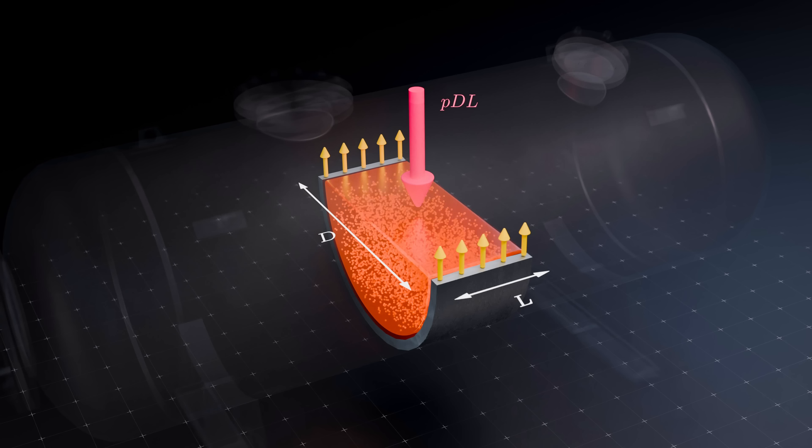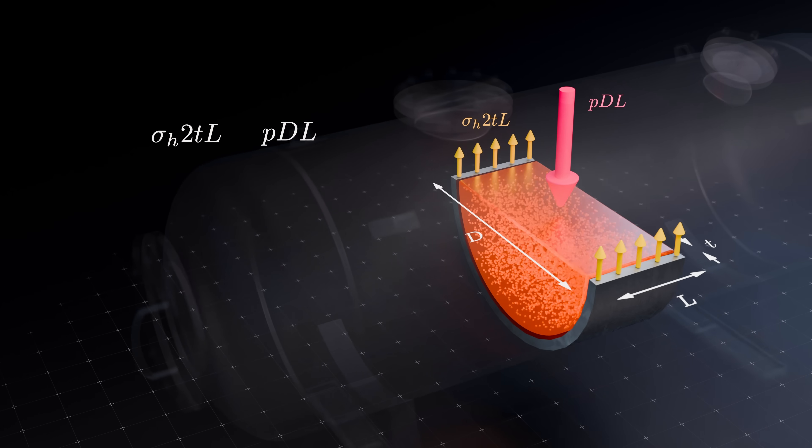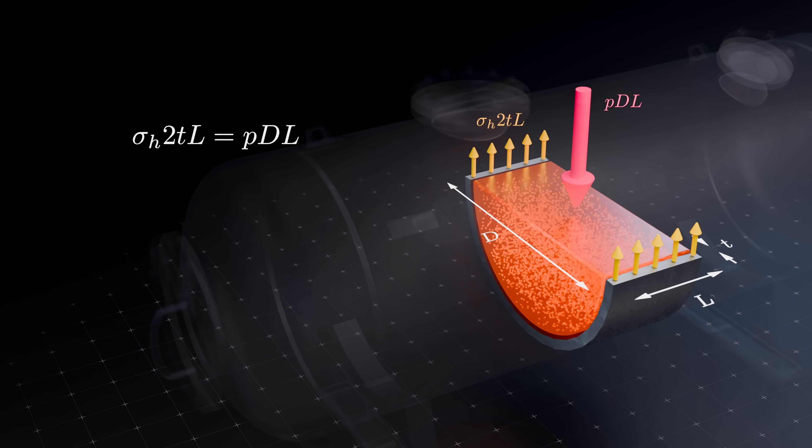The resultant of the hoop stress is a force that has a magnitude equal to the hoop stress multiplied by the area over which it acts. This area is 2 times the wall thickness, T, multiplied by L. The two force terms must be equal to maintain equilibrium. We can then solve to obtain the famous equation for hoop stress, PD over 2T.